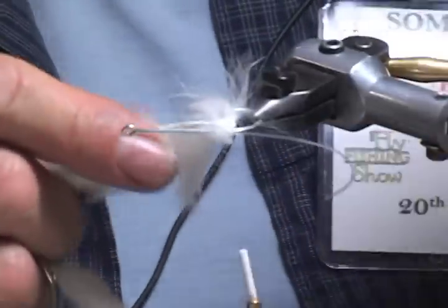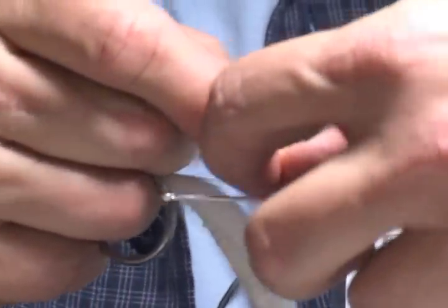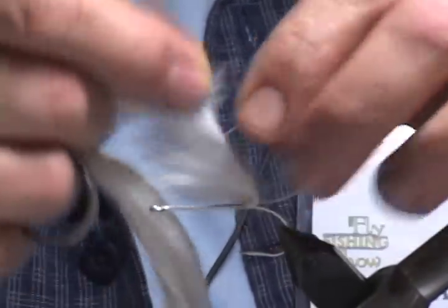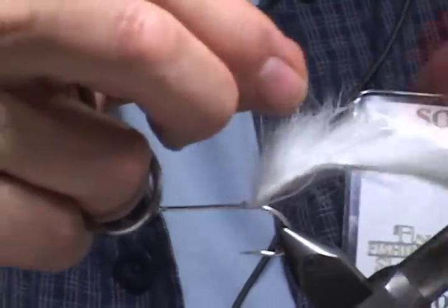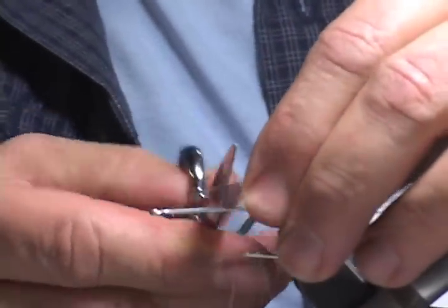Then you poke a hole using the hook point through the rabbit strip, take the hard mono, push it through the hole, pinch it a little bit, clip it to length.